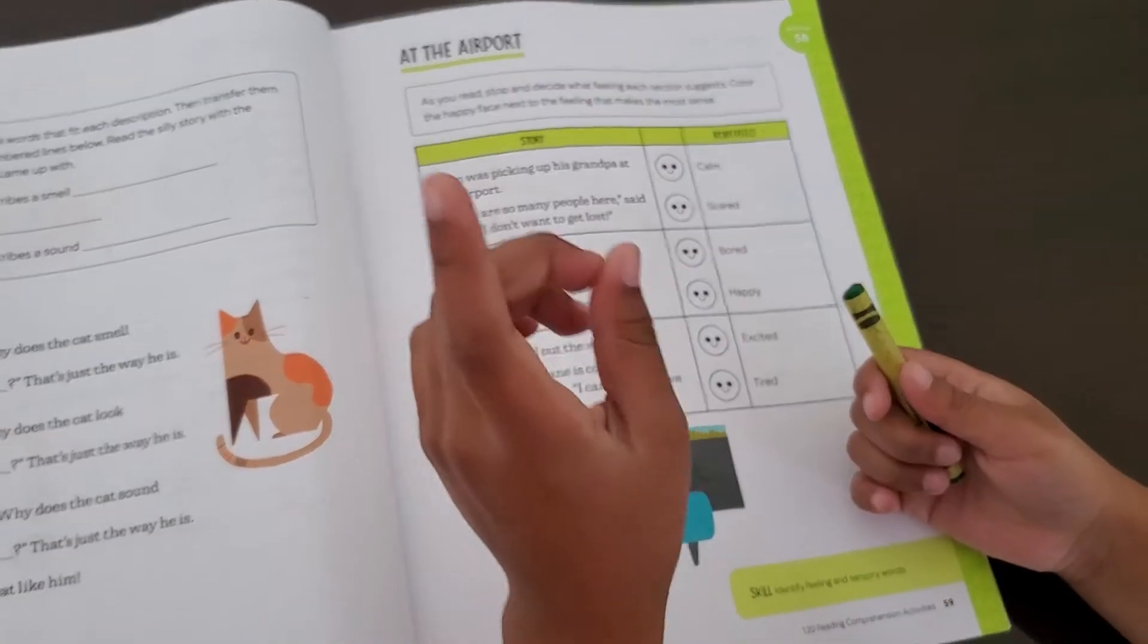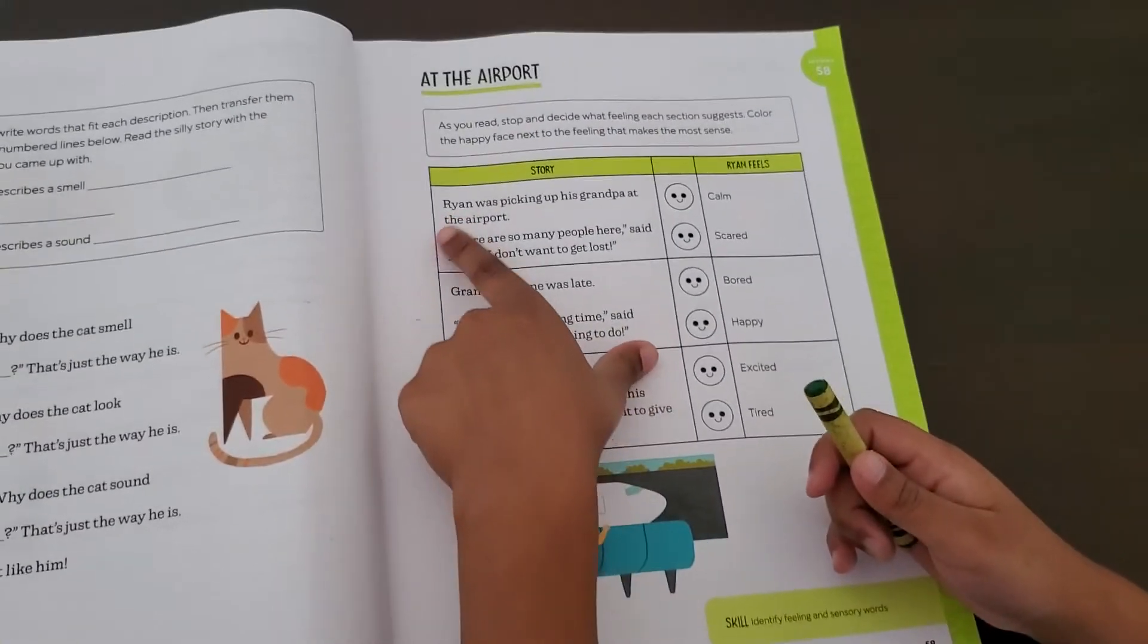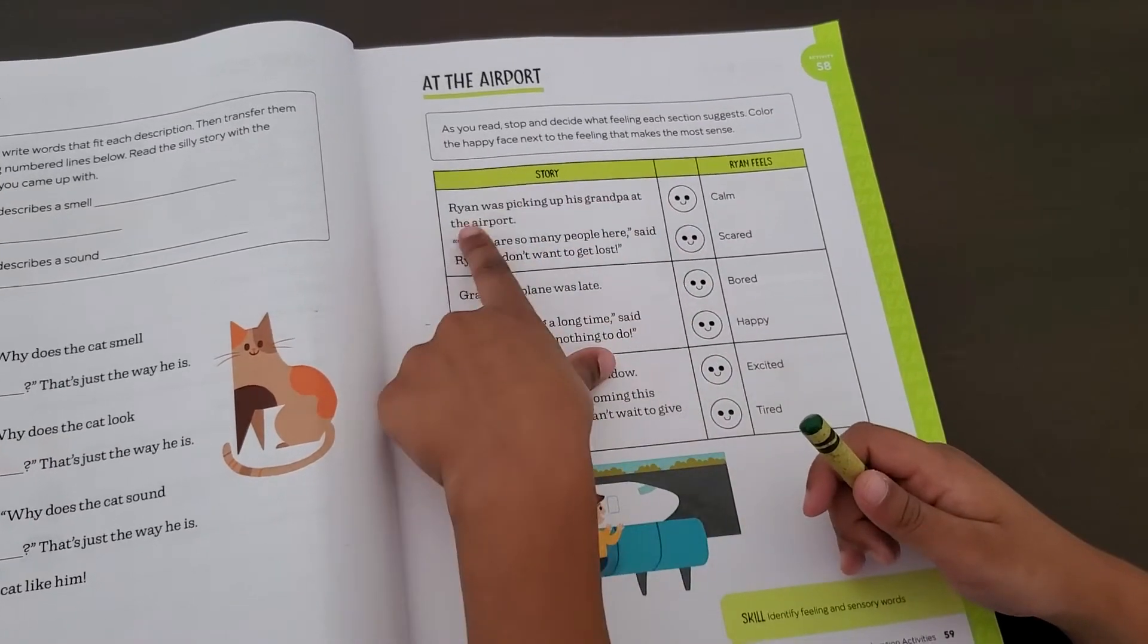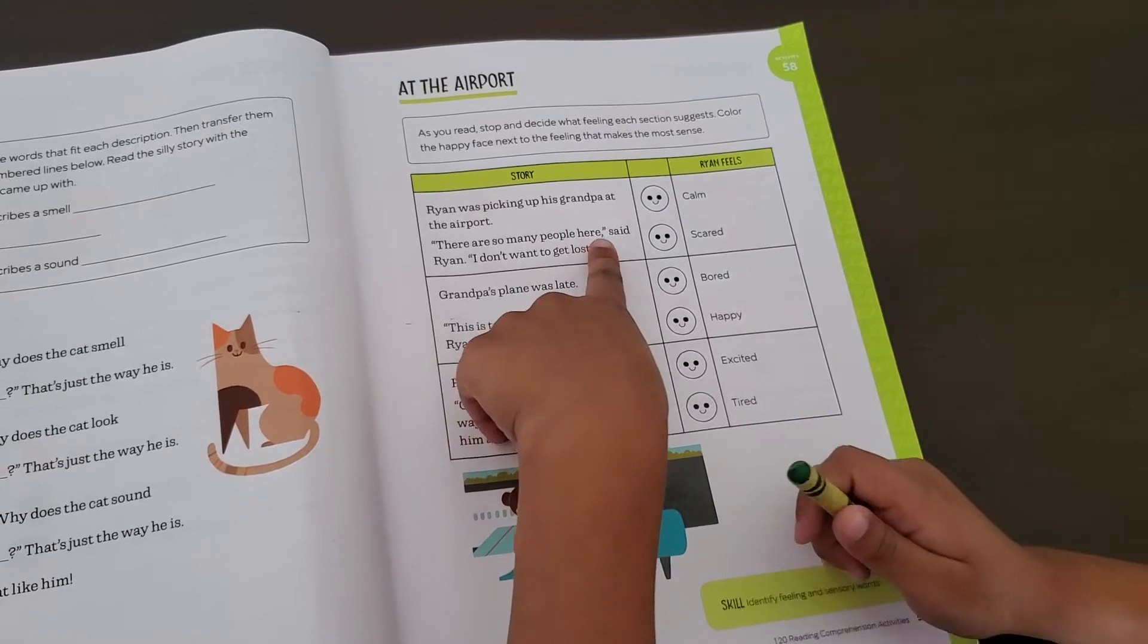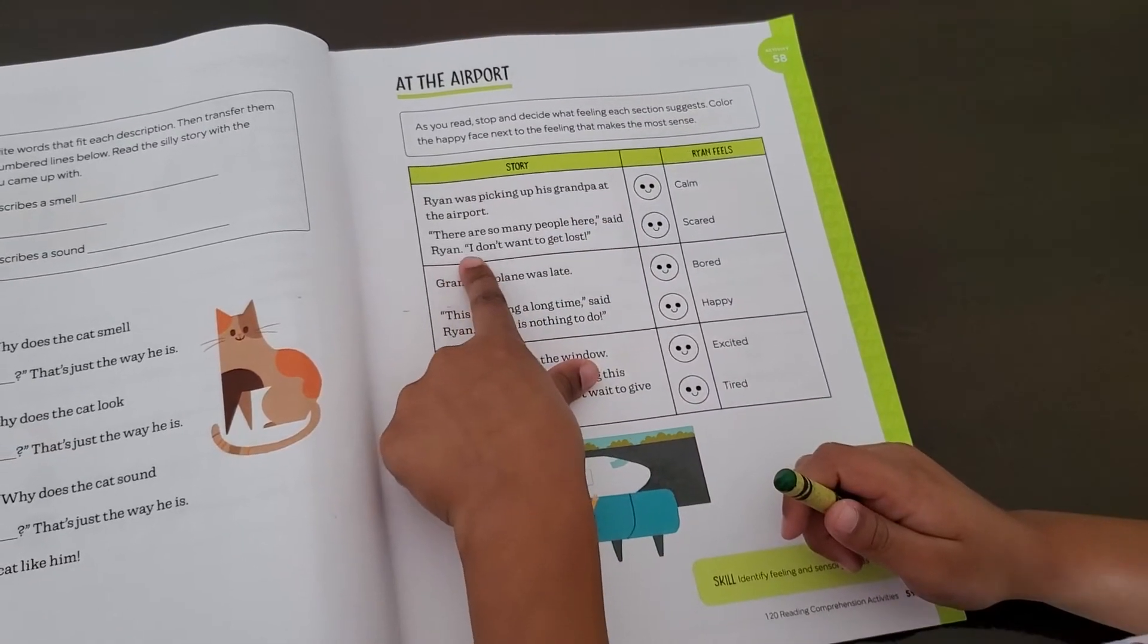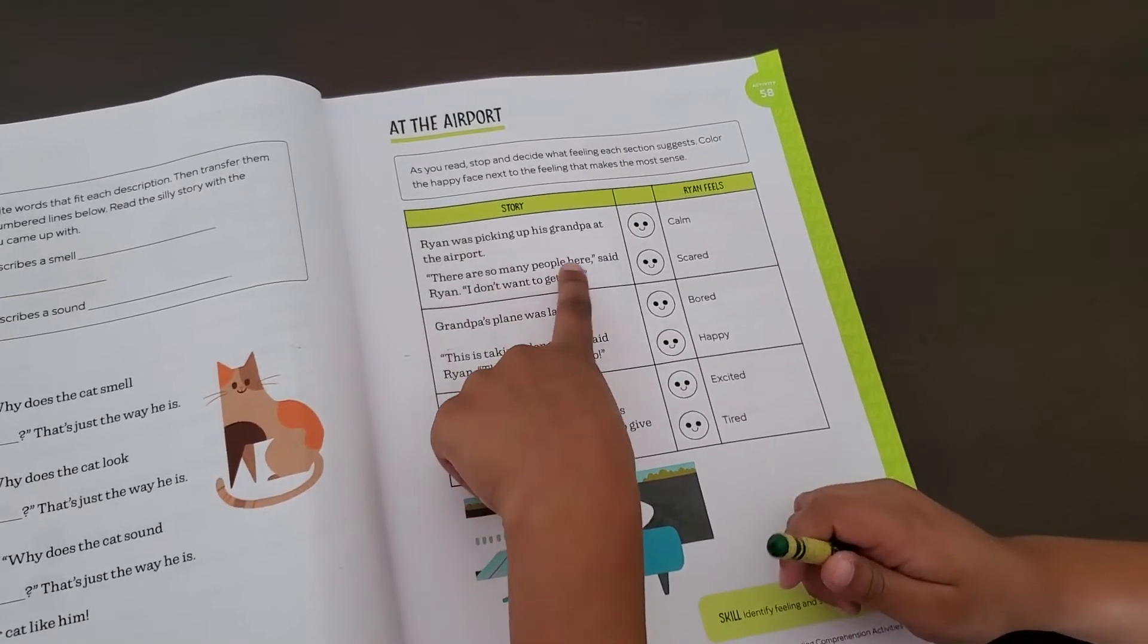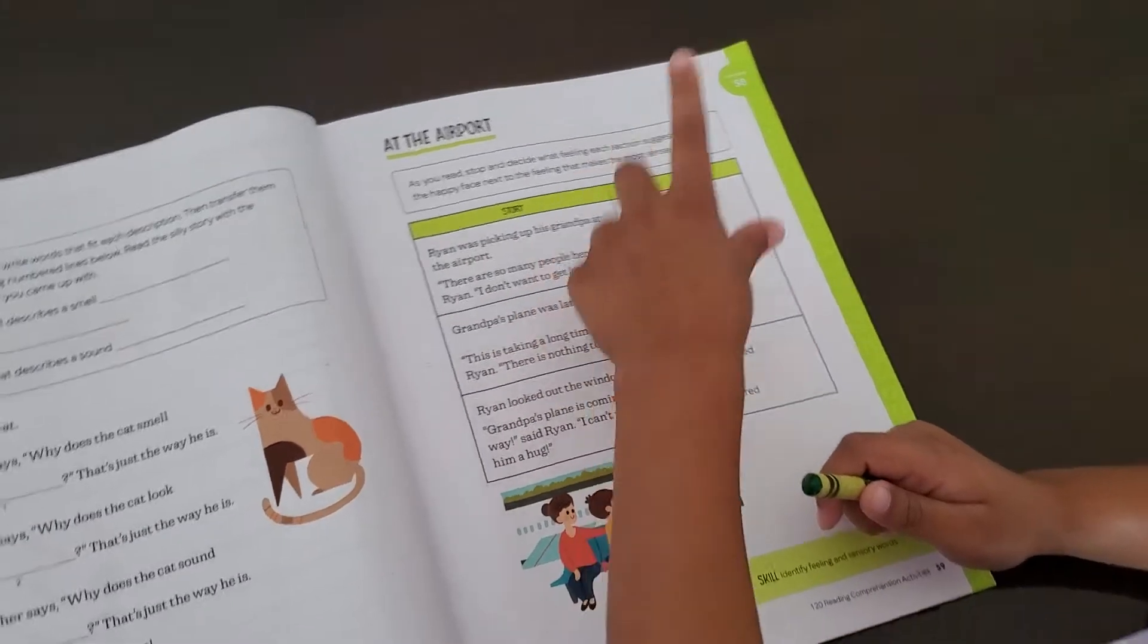Okay, first one, number one. Ryan was picking up his grandpa at the airport. 'There are so many people here,' said Ryan. 'I don't want to get lost.' So would he be calm or scared? Scared.